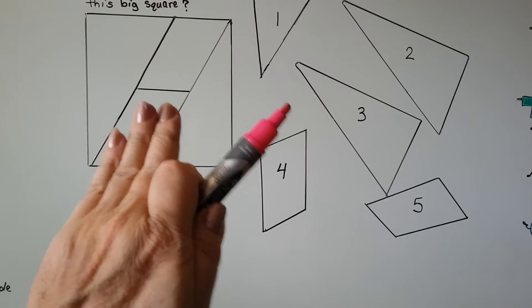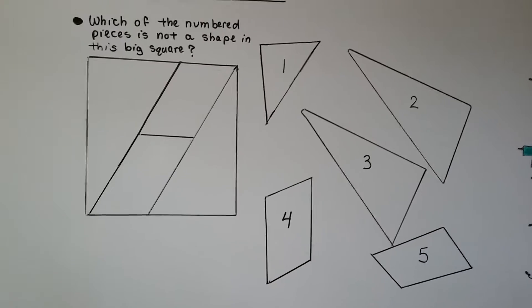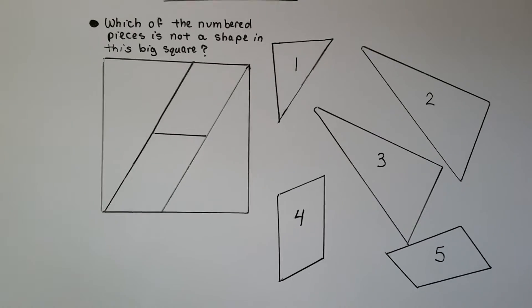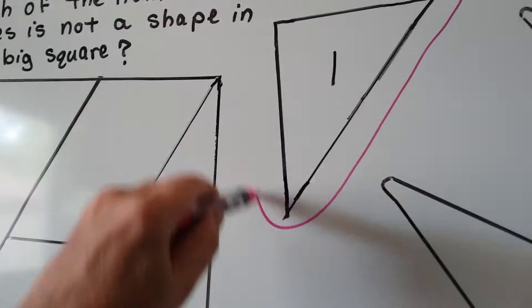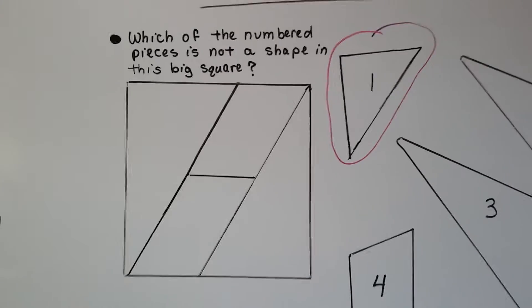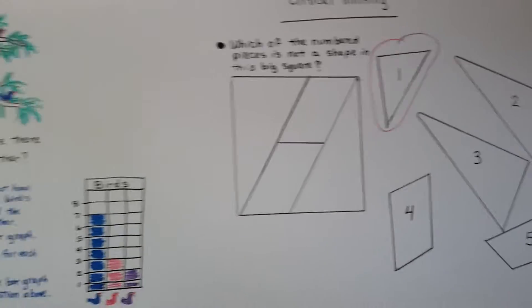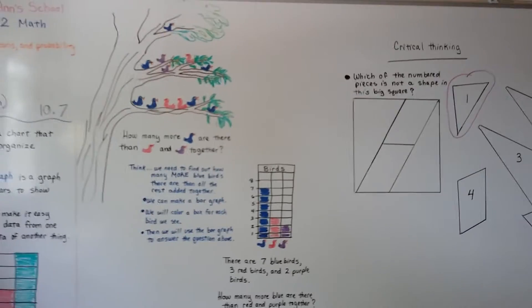So if you said number one doesn't belong, you're right. There's no triangle that size in this big picture, right? So this is the one that doesn't belong. It's number one. It doesn't fit in that picture. Okay? So we're going to move on and keep talking about shapes. We're going to talk about symmetry in the next video.